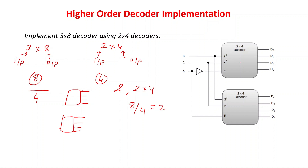We have the first 2x4 decoder and the second 2x4 decoder. The outputs of the first decoder are D0, D1, D2, and D3. The outputs of the second decoder are D4, D5, D6, and D7. By combining these two decoders, we have eight output lines in total.